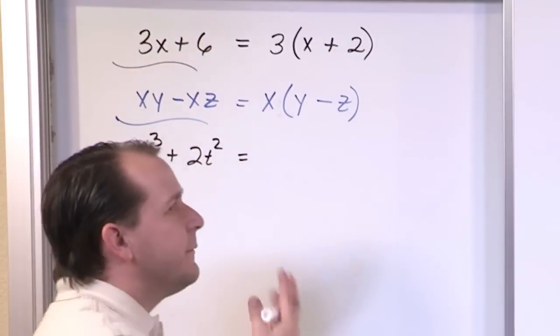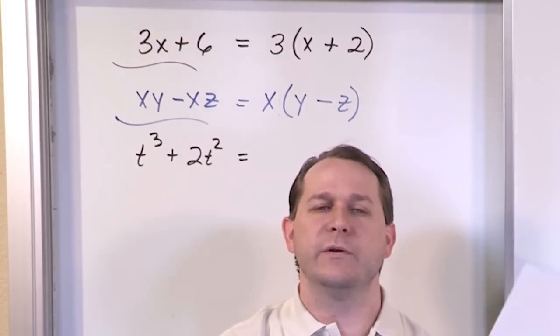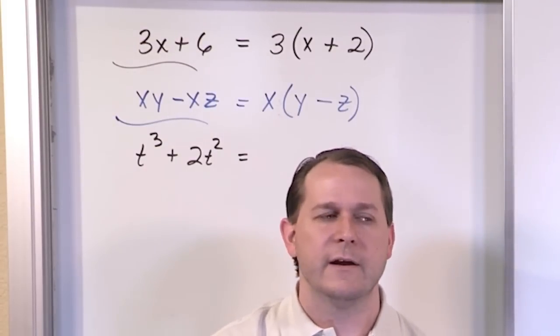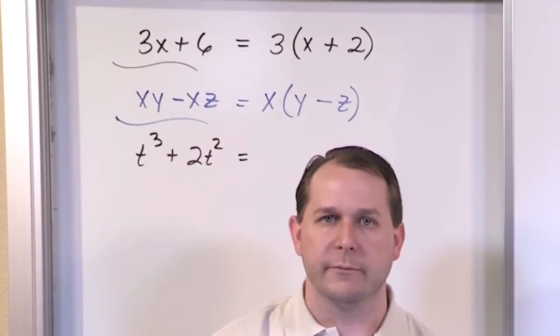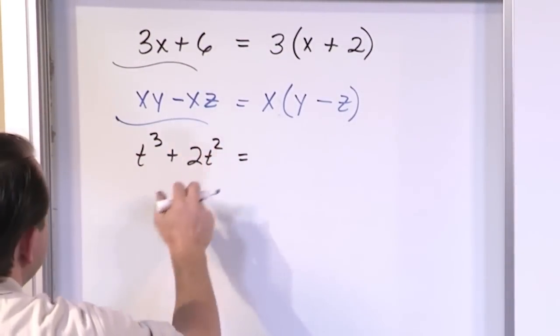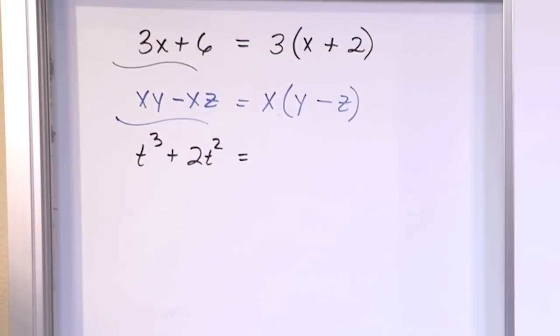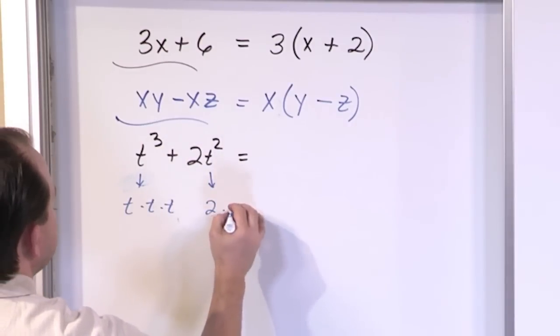Now again, the name of the section is factoring the greatest common factor. It means you're looking at your terms, you're finding out what's common, but really you want to pull out the largest thing you can that is also common to both terms. So you look at this and you say, well, all I have is a t cubed, and here I have a t squared. So you look and you say, well, those don't match. But then you realize that this is really t times t times t, and this guy is 2 times t times t.